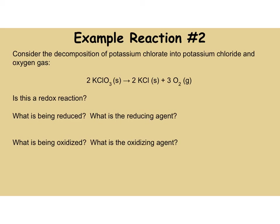Let's try the second problem, which is a little more challenging — the decomposition of potassium chlorate. Start with the one we know: oxygen is always going to be minus 2. There are three oxygens, so that's minus 6 total. Oxygen on the product side is zero because it's a diatomic gas. K and Cl together have to give us plus 6. Chlorine is the more electronegative atom, so chlorine is always going to form minus 1, which means potassium has to be plus 5.